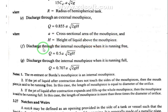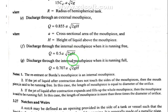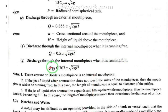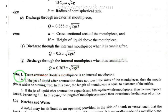Discharge through an internal mouthpiece when it is running free: Q equals 0.5 times a times square root of 2gH. Discharge through an internal mouthpiece when it is running full: Q equals 0.707 times a times square root of 2gH.